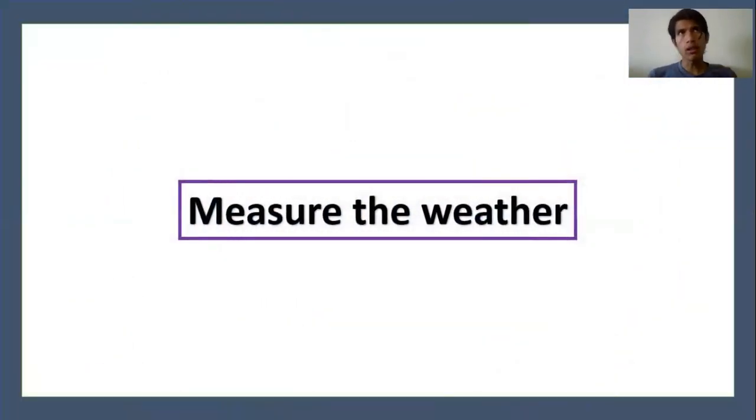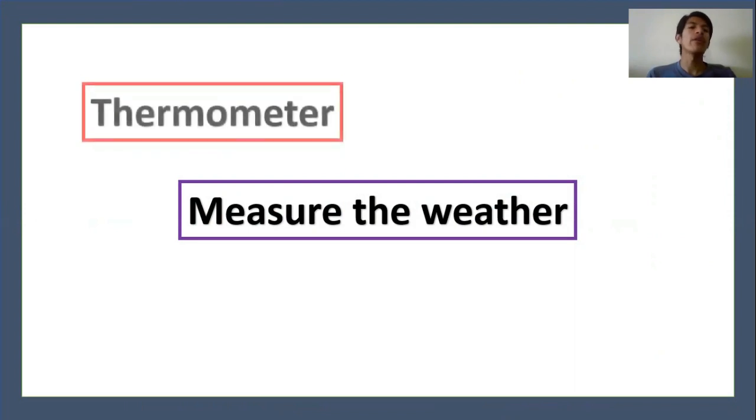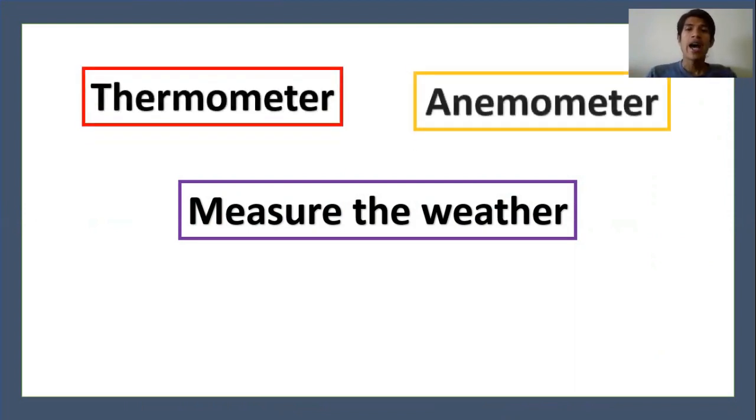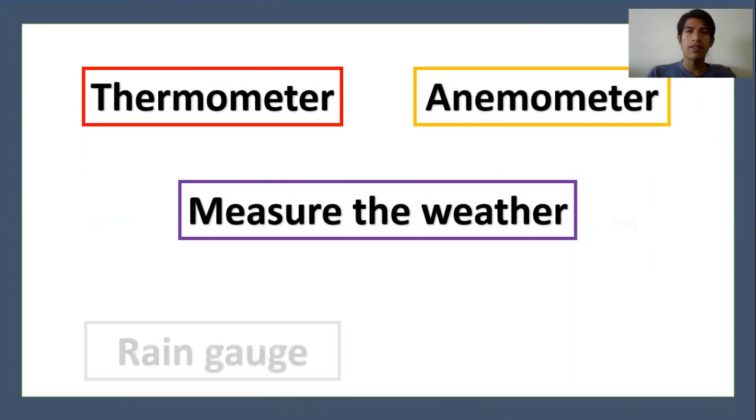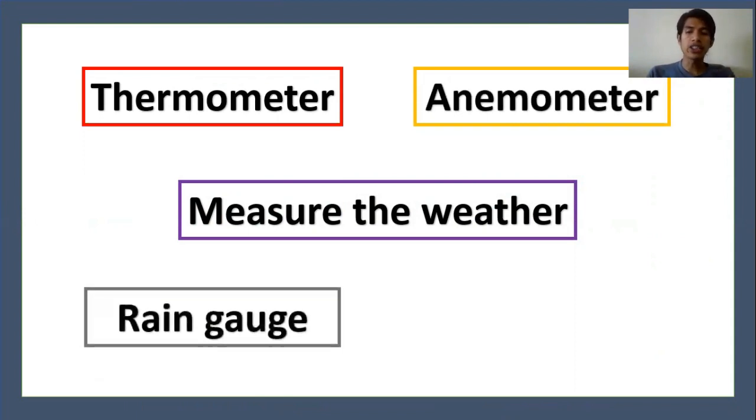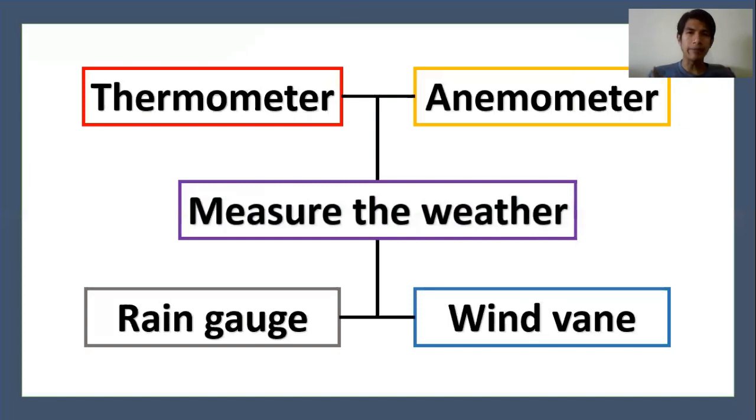Measure the weather. In order to measure the weather we have some tools. In this case we are going to check four tools. Number one, thermometer. Number two, anemometer. Number three, rain gauge. And number four, wind vane. We are ready to start. Let's go!